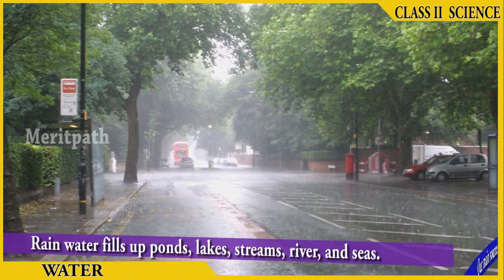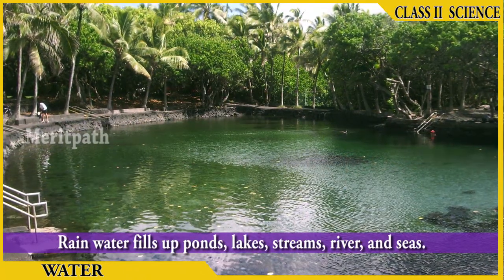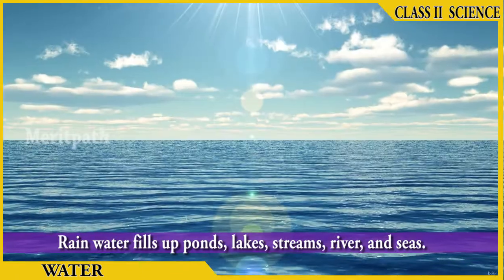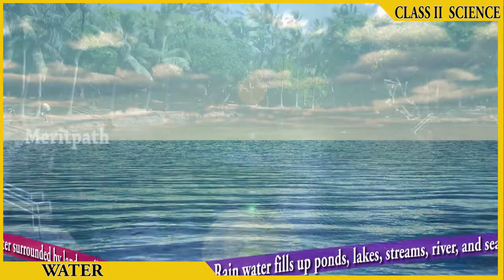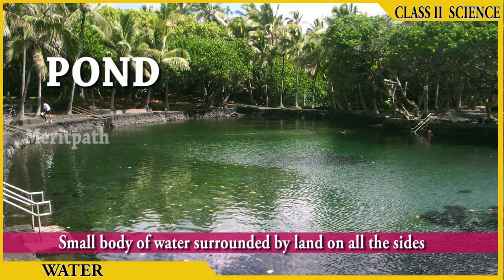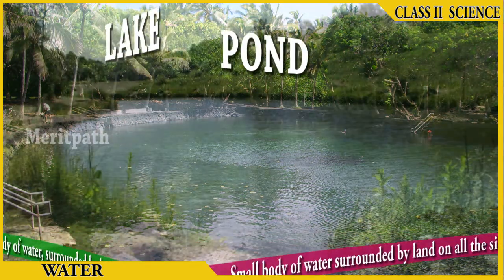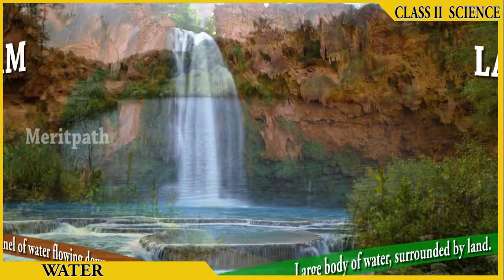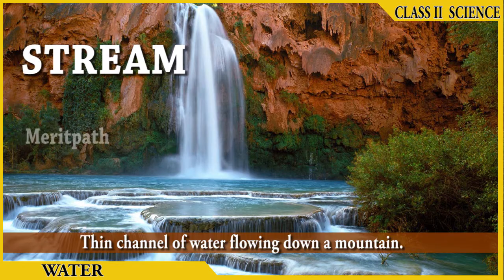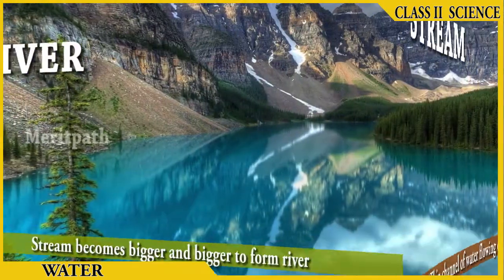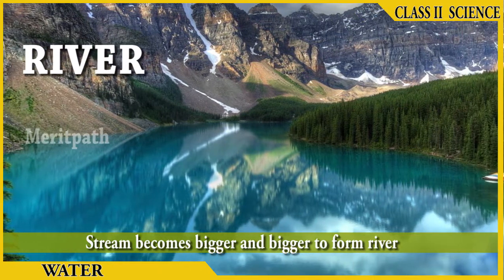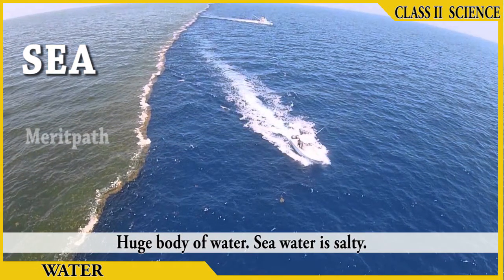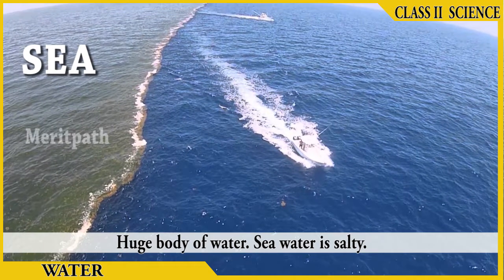When it rains, water in ponds, lakes, streams, rivers, and seas gets filled. A pond is a small body of water surrounded by land on all sides, whereas a lake is a large body of water surrounded by land. A thin channel of water flowing down a mountain is known as a stream, and these streams become bigger to form a river.